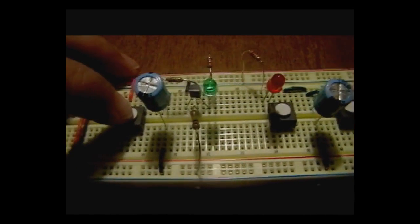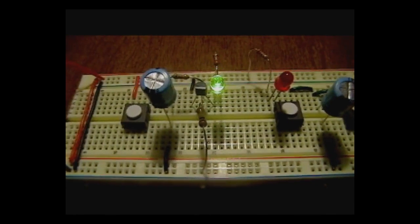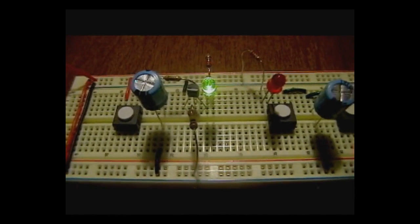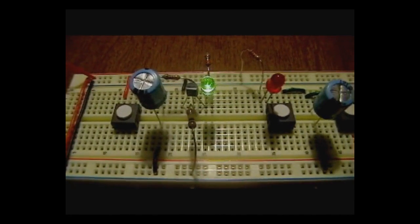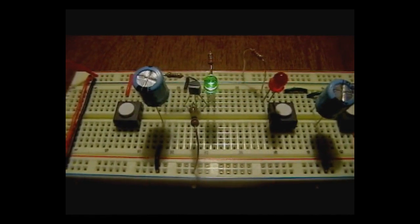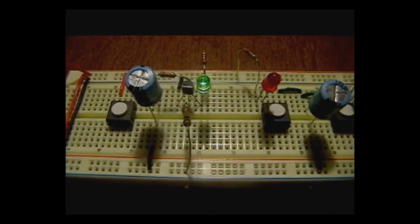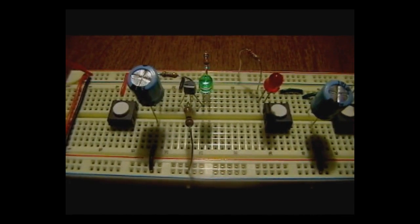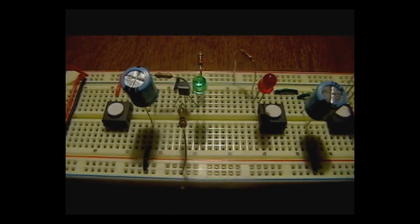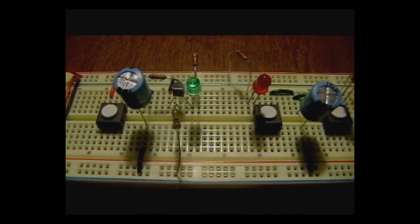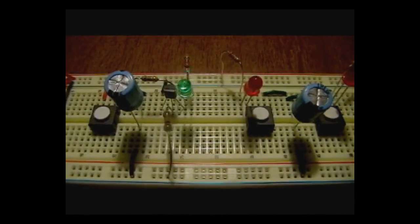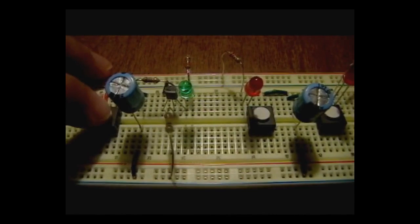So here we go. As I press this button and release it, you'll see that the LED stays lit, and it'll stay lit for several seconds. As that capacitor gradually discharges, now you're starting to see it dim, and here eventually it's going to go out, or at least nearly go out. You can see just the tiniest of glow in it. So that's a sample of what happens here.